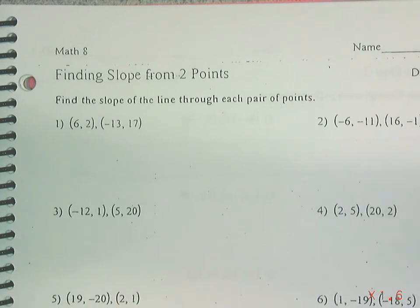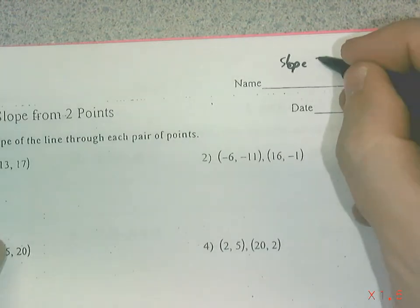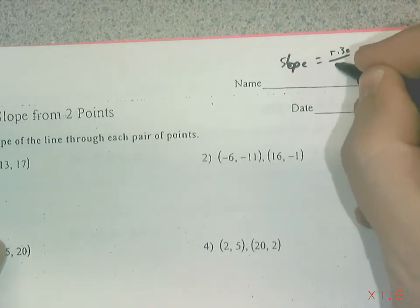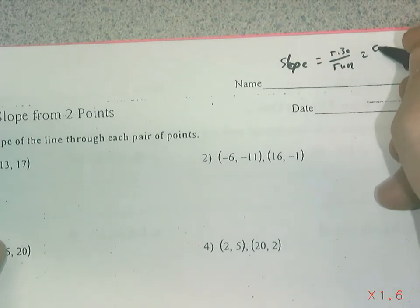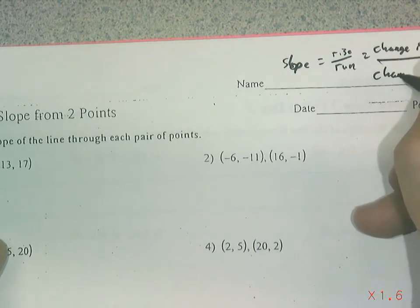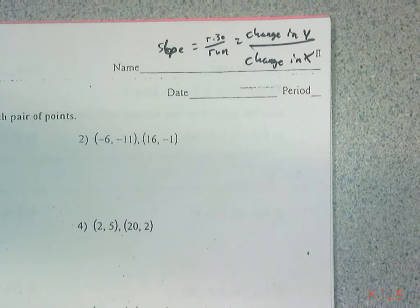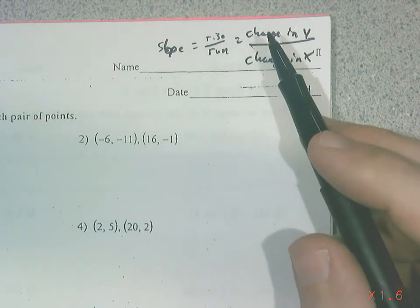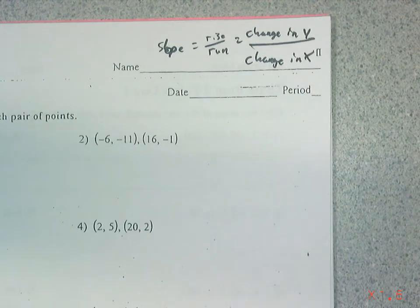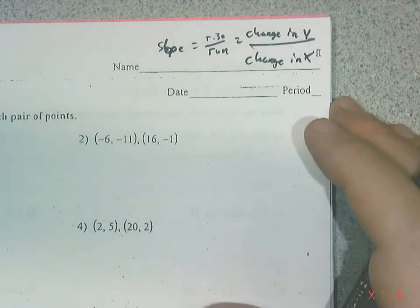Slope is always the change in y over the change in x. Slope is rise over run, or the change in y over the change in x. Another word we could use is 'difference' — difference in y over the difference in x. And when we think of difference, the operation that comes to mind is subtraction.